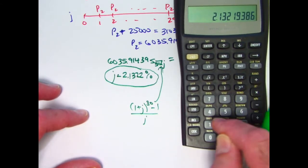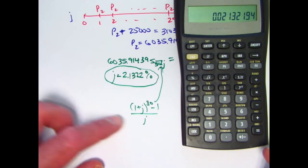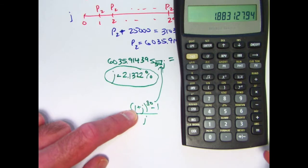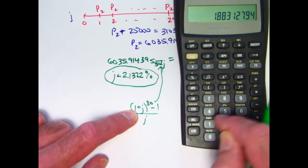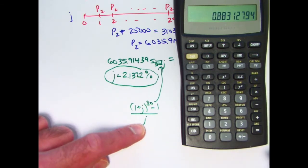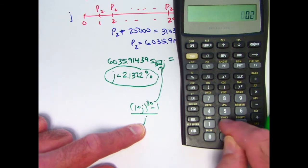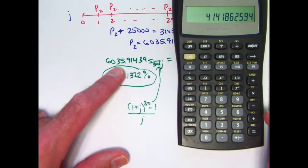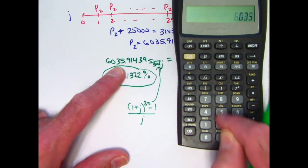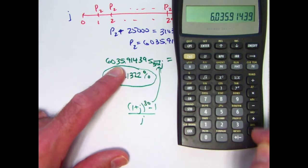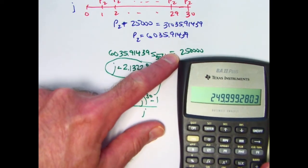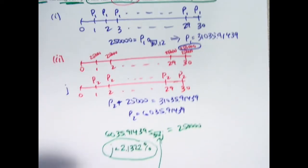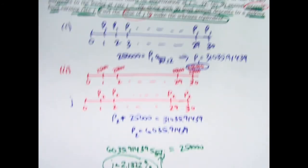Let's take this number and divide by 100. Add 1 to it. Raise it to the 30th power. Subtract 1. Divide by J. Divide by 0.021322. Multiply that by 6,035.91439 and you do get effectively 250,000. Okay. So I'm confident that this J is the answer. And yes, I did double check it with the answer key. That is correct.